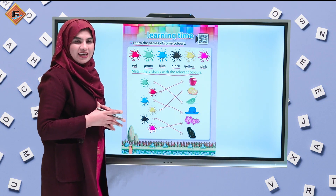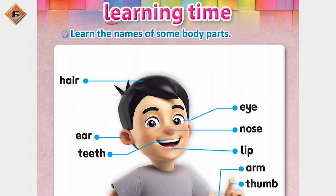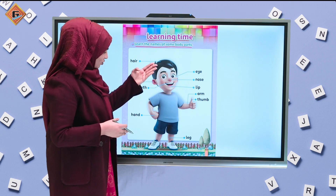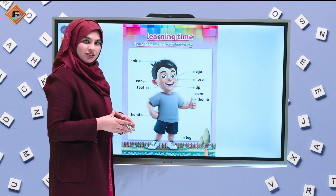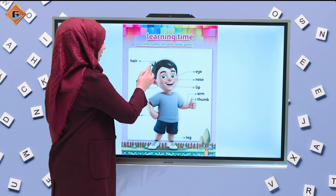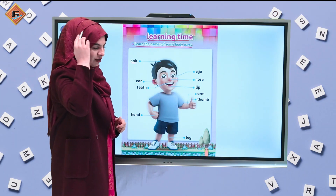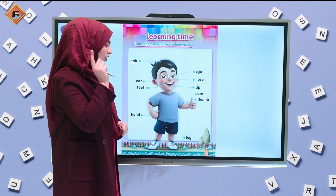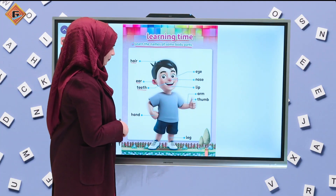Ab hum chalate hai next page peh. This is page number 83 and we have learning time — learn the names of some body parts. This is very easy, ye to ap logo ko pehle se bhi aate honge. Here is the picture of a boy and hum body parts ko yaad karenge. Pehle hai — hair. Everybody touch your hair. And ear — touch your ear. And teeth.